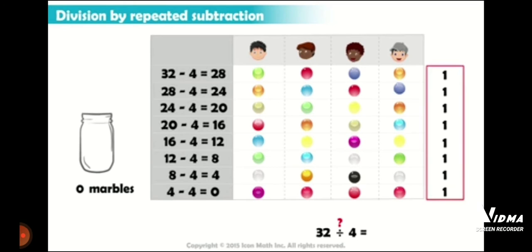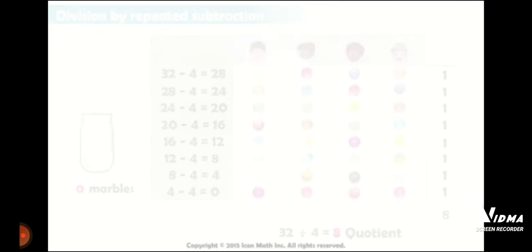We can identify it like this. So repeated subtraction means we till the time will not reach to the number 0, we have to again and again subtract that particular number. 32 marbles divided among 4 equals 8. So 8 is the answer which is also known as the quotient.